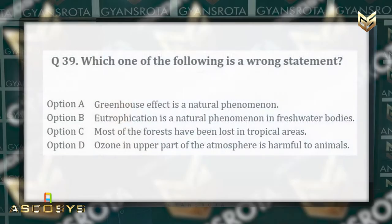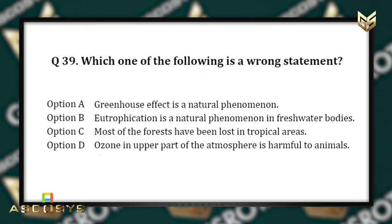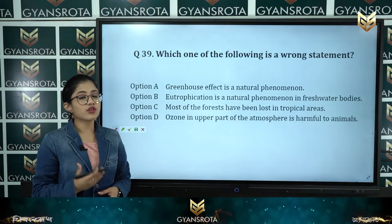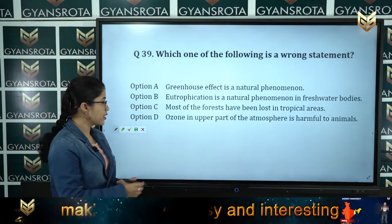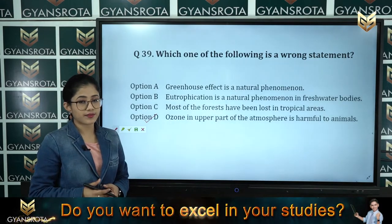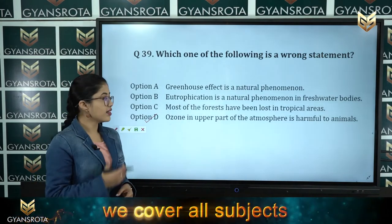Question 39: Which one of the following is a wrong statement? Option A: Greenhouse effect is a natural phenomenon. Option B: Eutrophication is a natural phenomenon in fresh water bodies. Option C: Most forests have been lost in tropical areas. Option D: Ozone in the upper atmosphere is harmful to animals. The wrong statement is option D, because ozone depletion is harmful to animals, plants, and all living organisms on Earth.